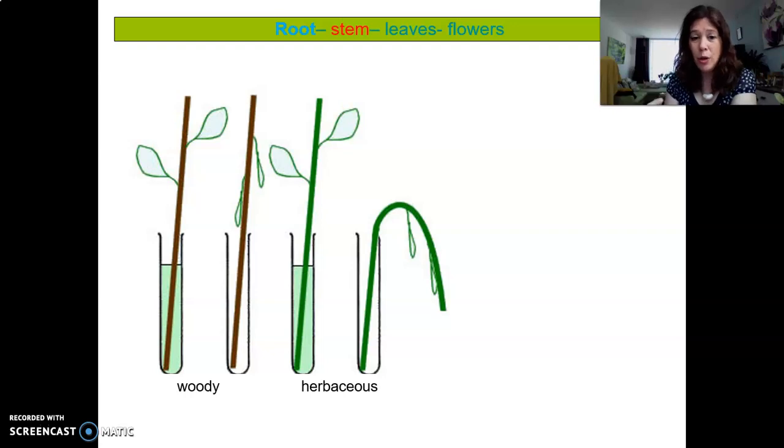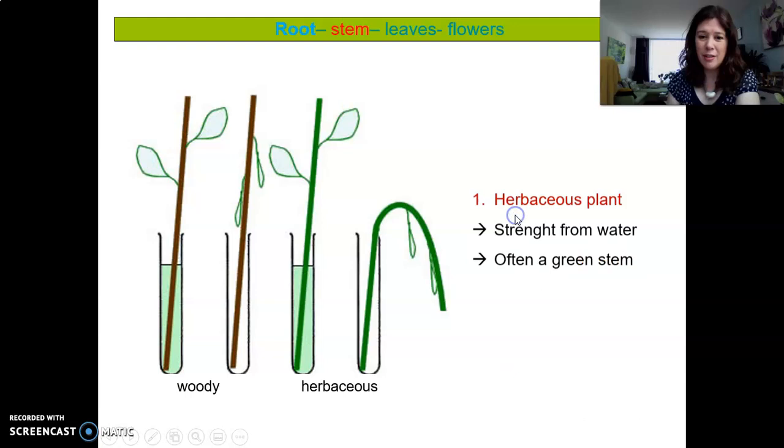It's only water that keeps the stem upright. So with herbaceous plants, like tulips, when there's no water, then there's no more support and the whole stem sort of droops. Whereas in a woody plant, if you don't give it water, then only the leaves will wilt, will hang, but the stem stays straight up because the wood gives it support and strength.